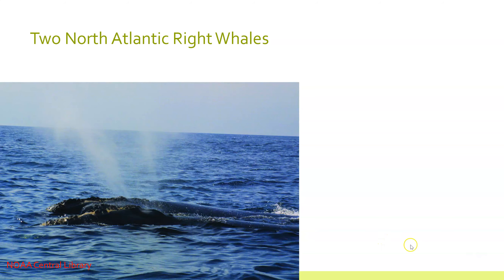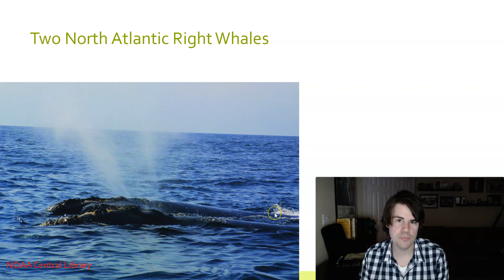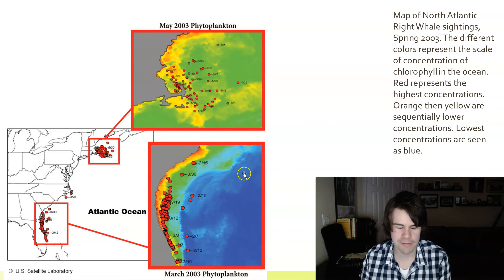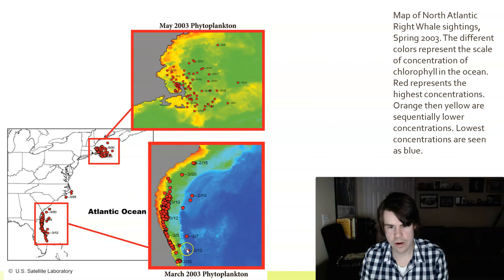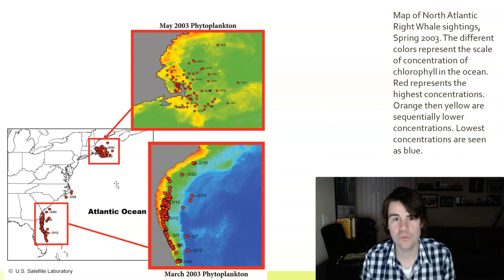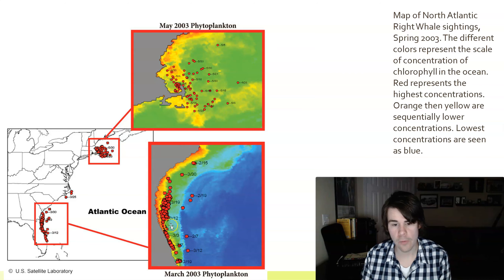Our first case example is the North Atlantic right whale. They are filter feeders — they use baleen to filter feed on krill and various small things. You can track them and they are very abundant off the east coast of Florida. They also go up into New England. The different colors on the map represent chlorophyll concentration — red means really high. So when chlorophyll is really high, phytoplankton would be really high, because chlorophyll is inside phytoplankton.